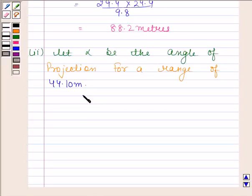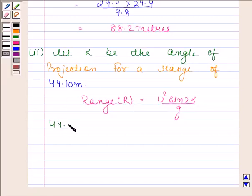We know that range is given by u squared sine 2 alpha divided by g. Here we are given R as 44.10 meters, so 44.10 equals 29.4 squared sine 2 alpha divided by 9.8.